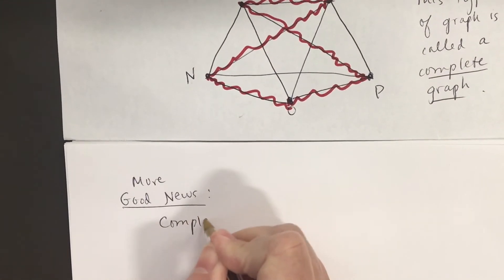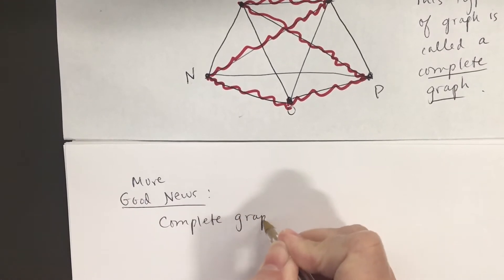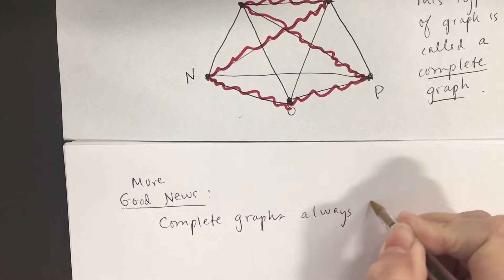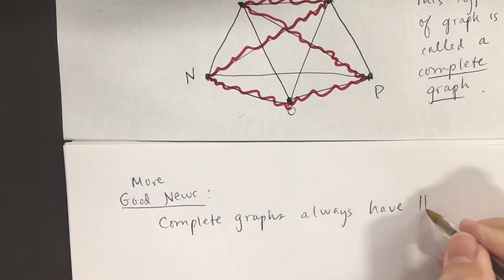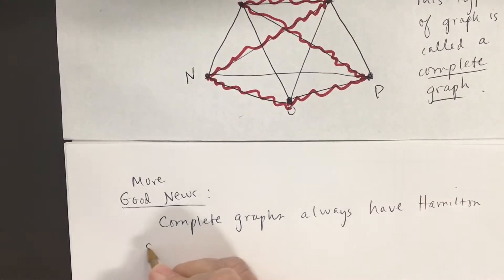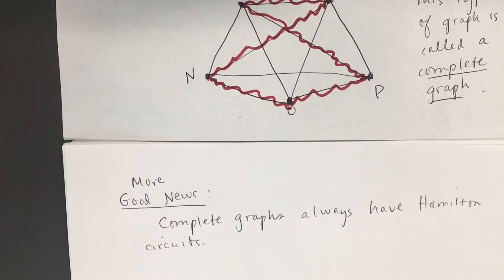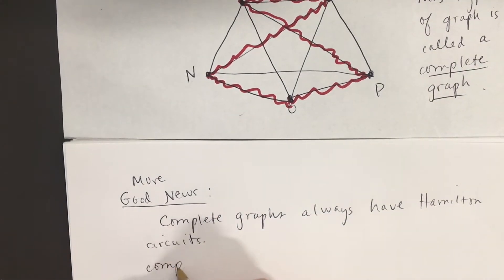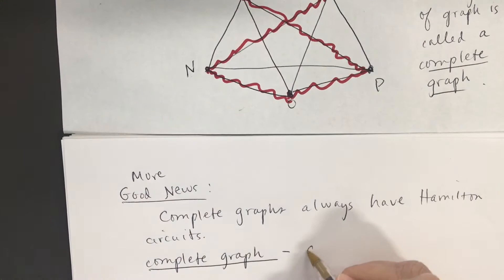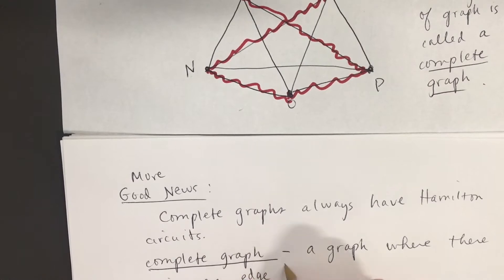Complete graphs always have Hamilton circuits. Let's give a definition of a complete graph. A complete graph is a graph where there is an edge between any two pairs of vertices.